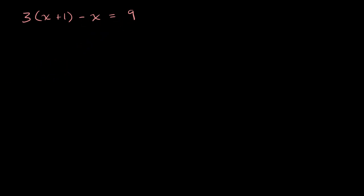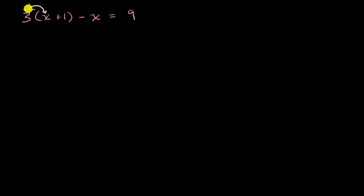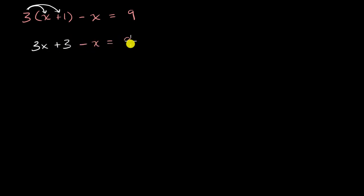The first thing my brain wants to do is simplify. The first thing that looks a little bit hairy here is I have three times the expression x plus one. So I might be able to simplify that if I multiply three times x and three times one. If I did that, I would get three x plus three minus x is equal to nine.